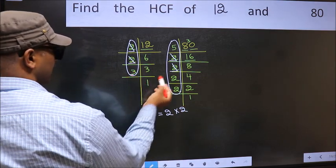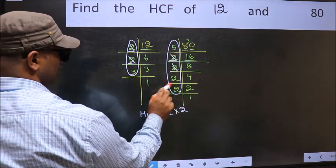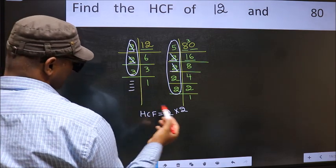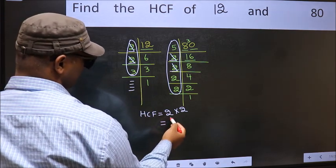Next number 3. Do we have 3 here? No. No more numbers have been left out. So our HCF is 2 times 2, which equals 4. That is our HCF.